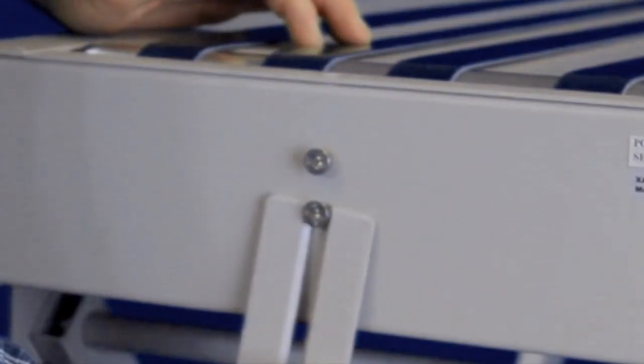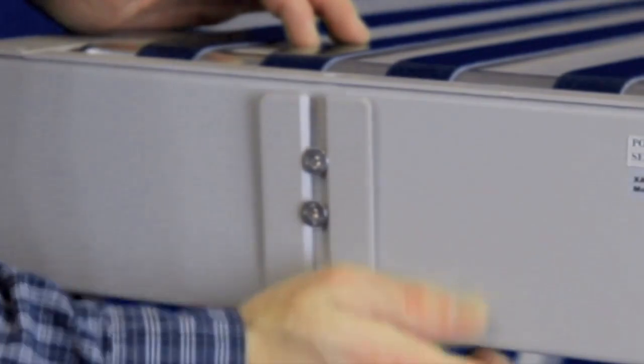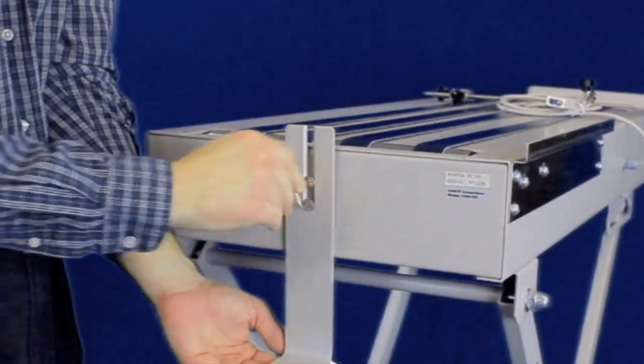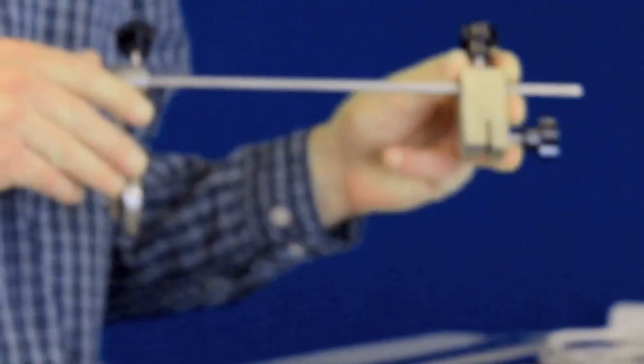Install the tilt bracket after loosening the two screws. Once the tilt bracket has been placed into position, hand tighten until the bracket can be verified at the correct height.